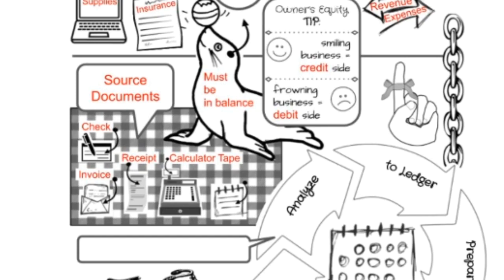We have calculator tape, which is not typically calculator tape anymore — it's typically a printout from a point-of-sale system. What it represents is daily sales. If you have customers coming to your store and they pay cash — maybe 10, 20, 1,000 customers a day — a daily printout of sales represents all of those cash purchases for that entire day.